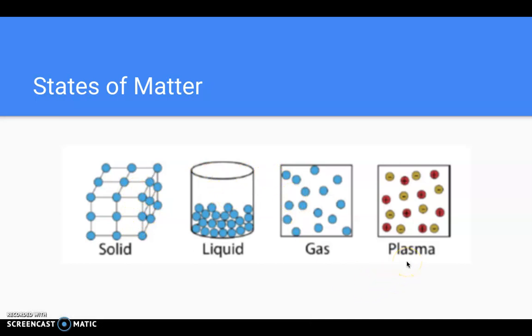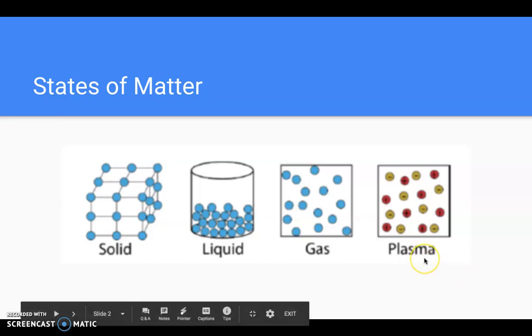There is a fourth state of matter that is rarely seen on Earth, it's uncommon. However, it is very abundant, or there's a lot of it in the universe in outer space, and that is known as plasma.